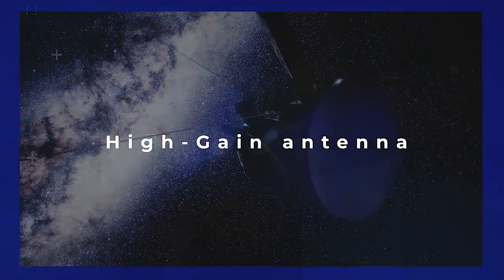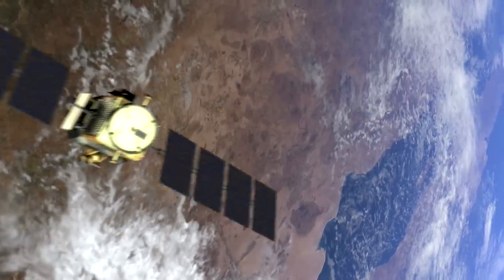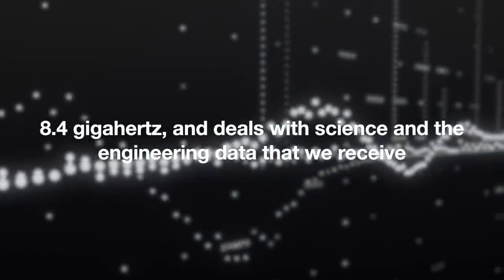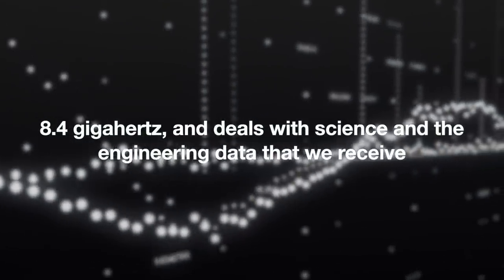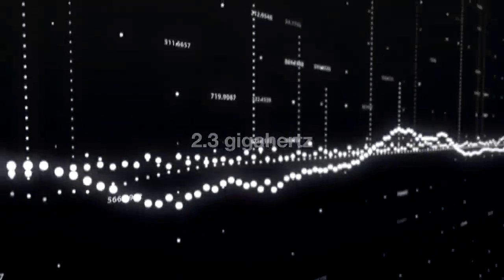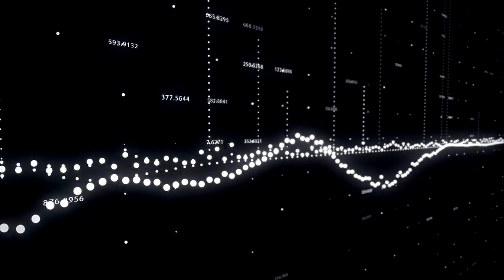High-gain antenna. The Voyagers send data back to Earth on two frequencies. The first of those at 8.4 GHz and deals with science and the engineering data that we receive. The second frequency at 2.3 GHz sends data regarding the health and present state of the craft.